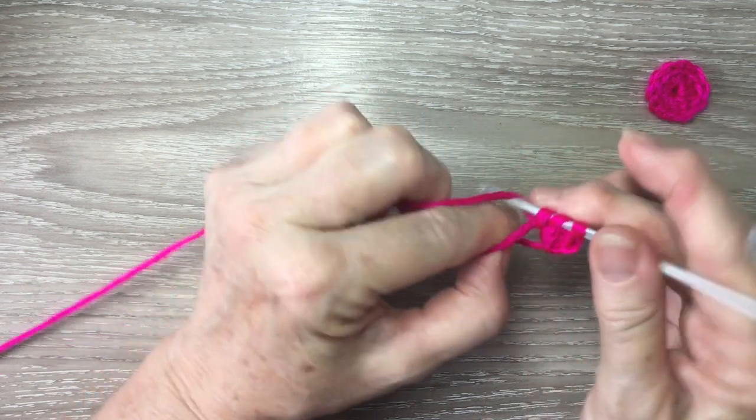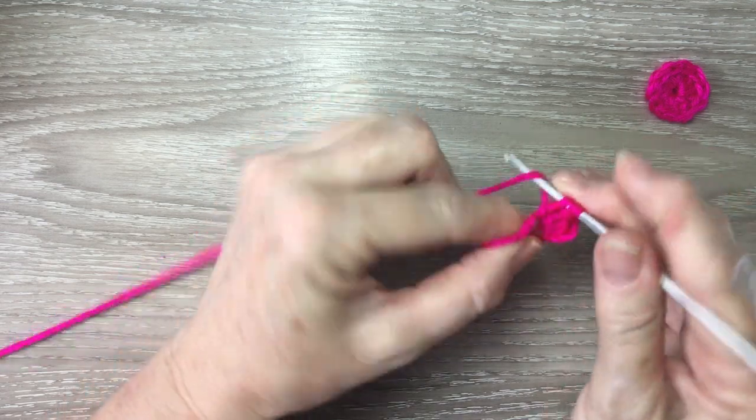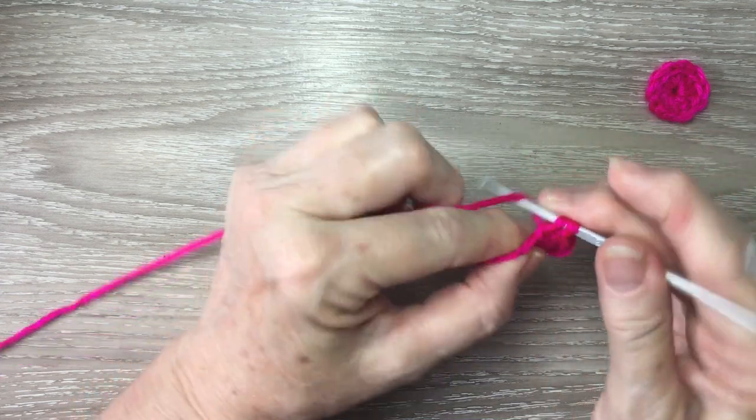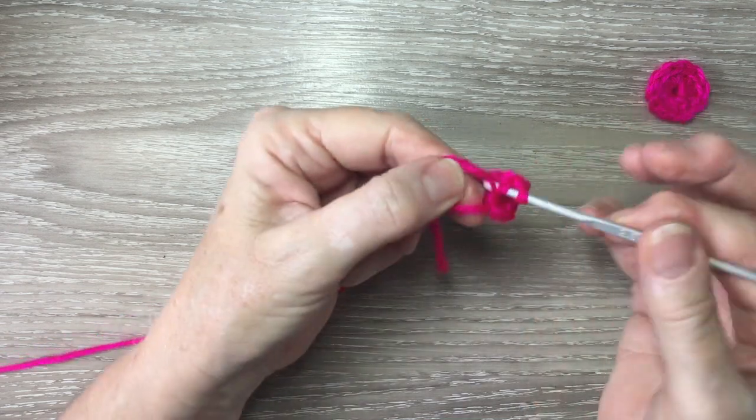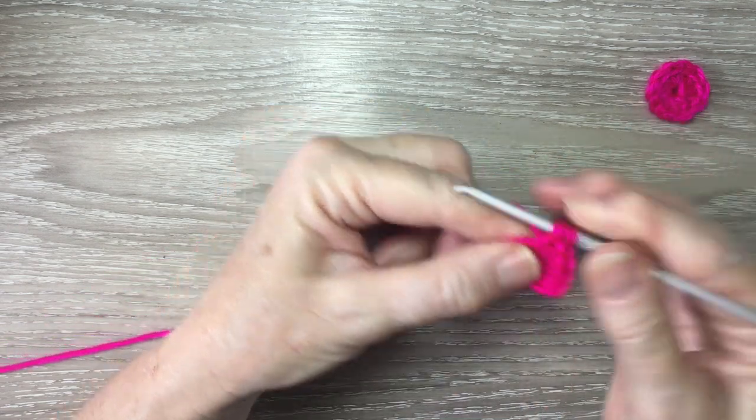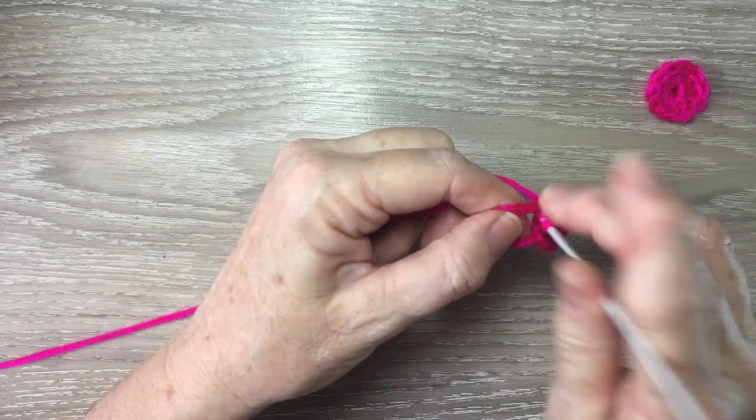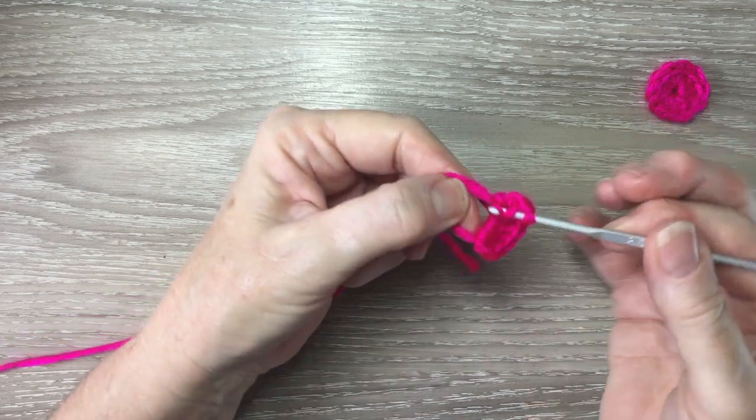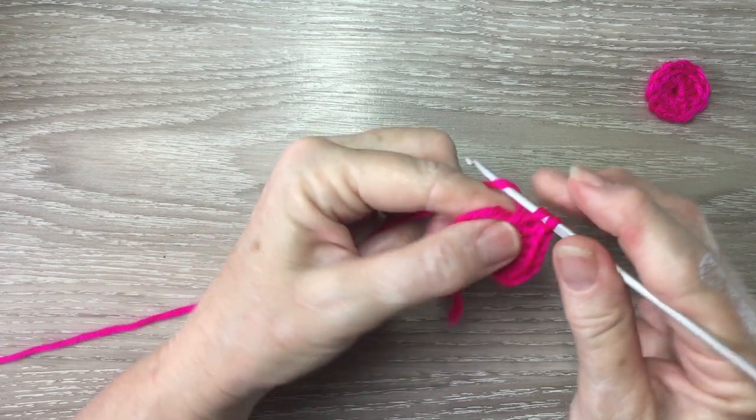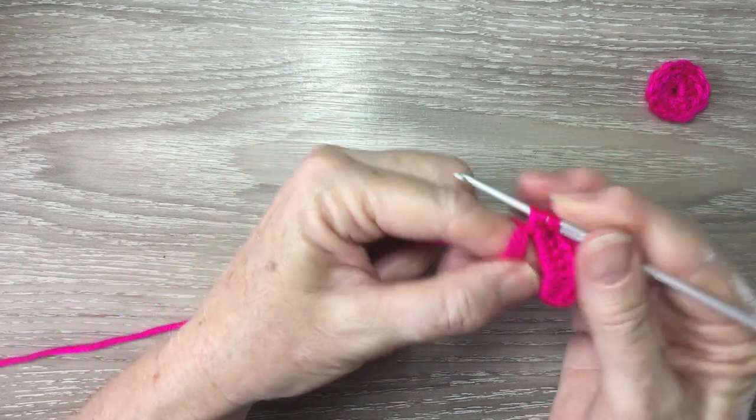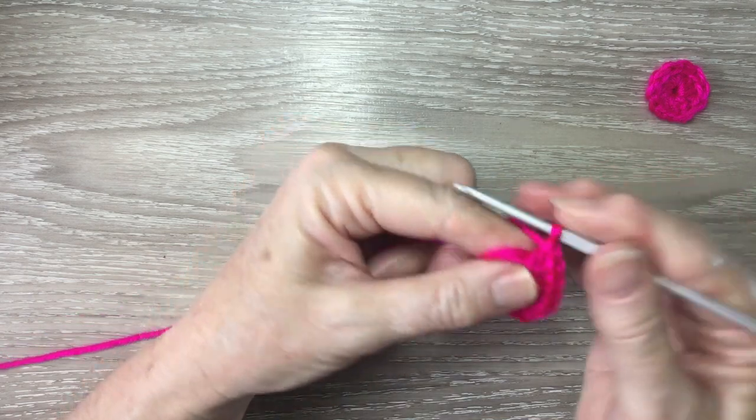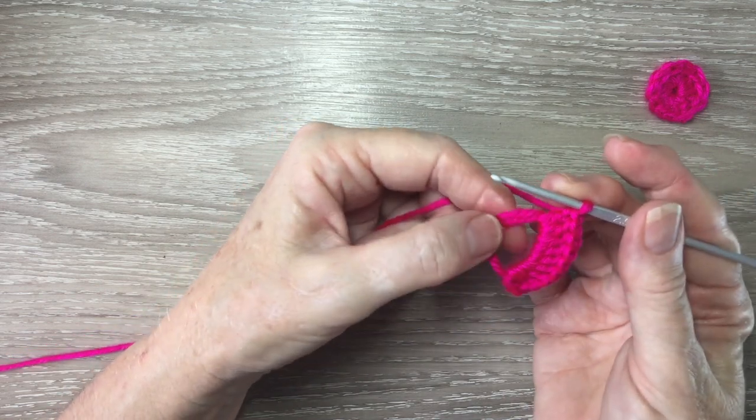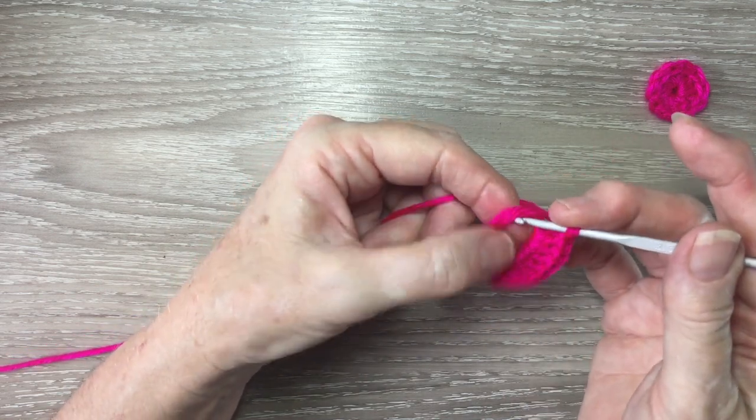And I just work my double crochet into the circle, and I'll pull it tight when I've got enough double crochet. Now just make sure I'm working over the two lots of yarn.